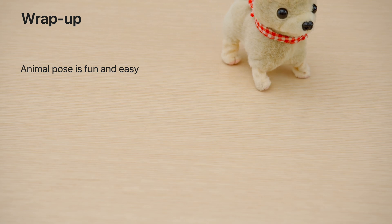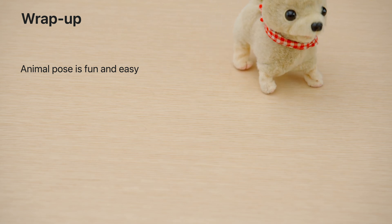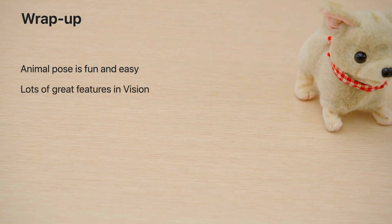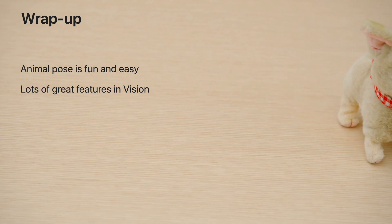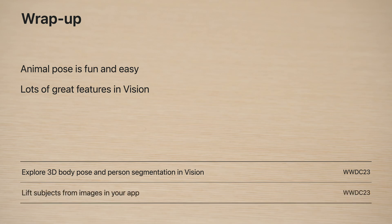Today I talked about the new Animal Body Pose and all the amazing things that can be done with this new API. I also presented important API updates and other enhancements in Vision. Please check the session 'Explore 3D Body Pose and Person Segmentation in Vision' to learn about the new 3D Body Pose and Person Segmentation APIs. And if you want to segment any selected foreground object, please refer to the session 'Lift Subjects from Images in Your App'.